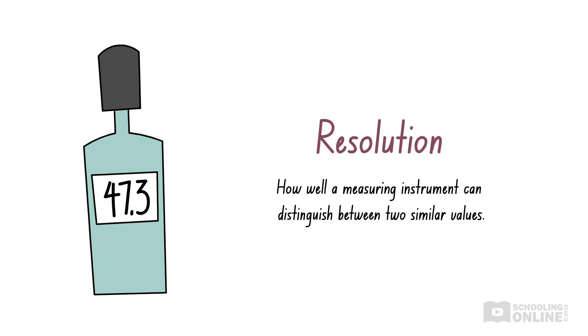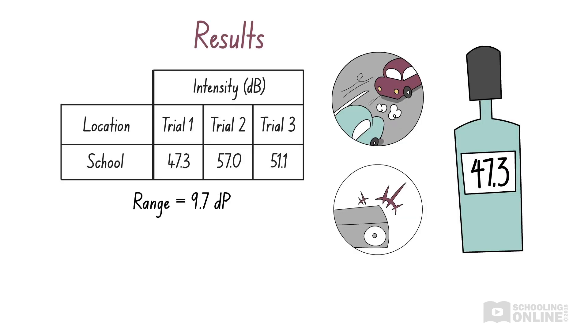If you would like to revise this, please see our earlier video on accuracy in HSC physics skills. Here, we notice that the variation in our results is much larger than the increments of the decibel meter. Therefore, we may conclude that random errors such as random fluctuations in background noise had a very significant effect on the results, making them unreliable.